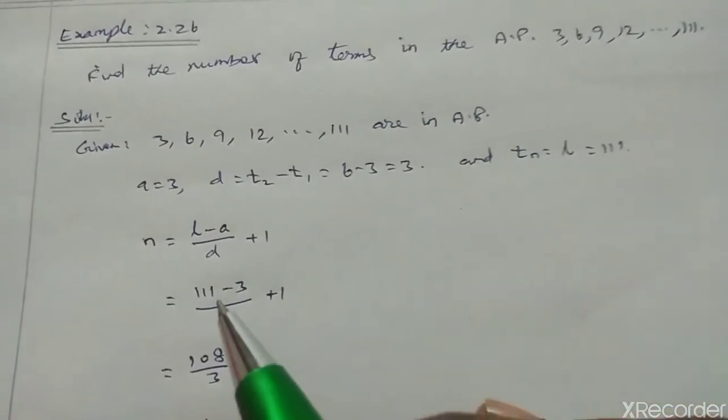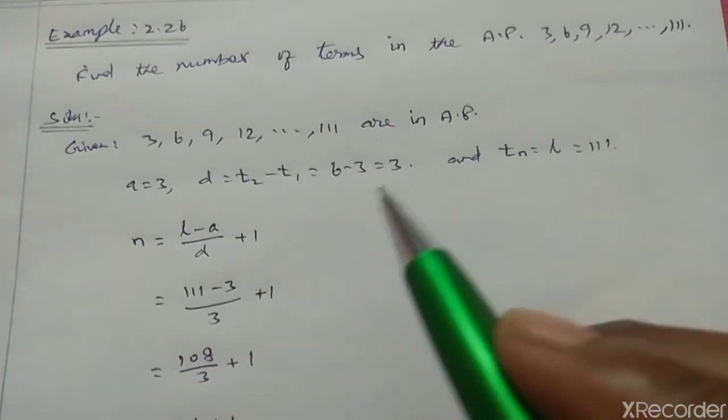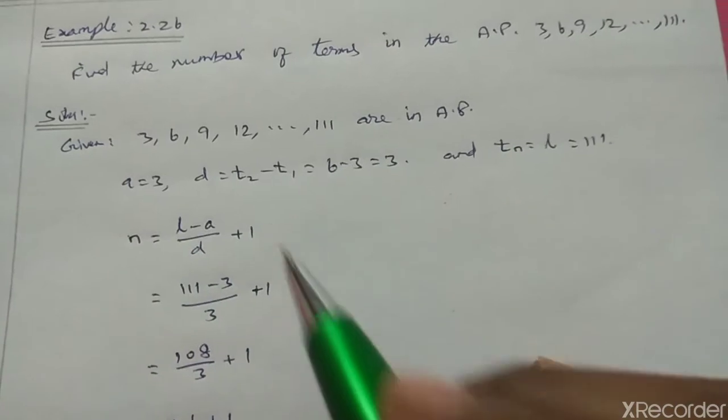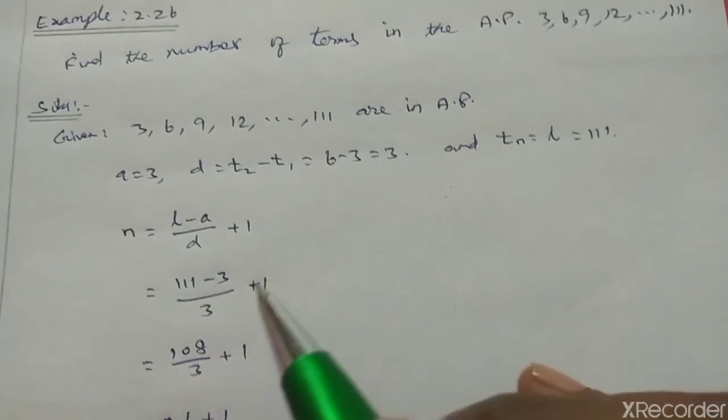So L equals 111, A value minus 3, divided by D value 3, plus 1. That is 111 minus 3, which is 108, divided by 3 plus 1.